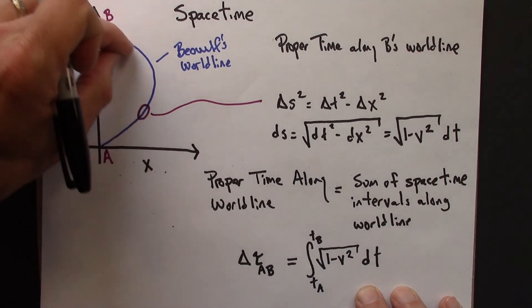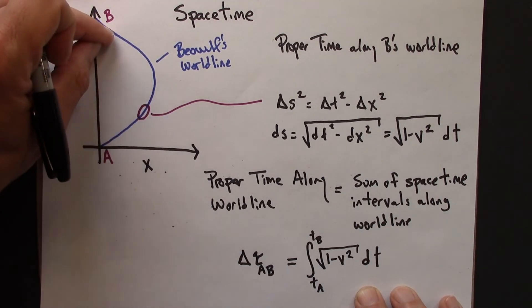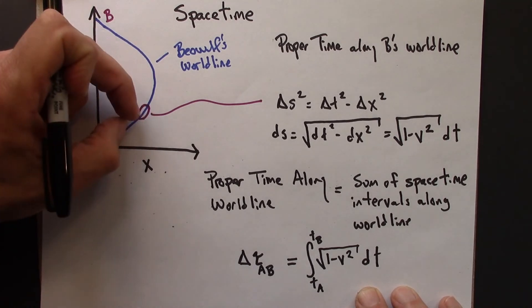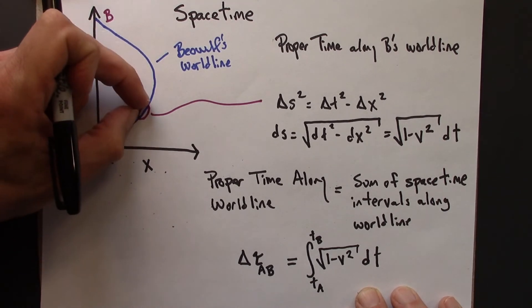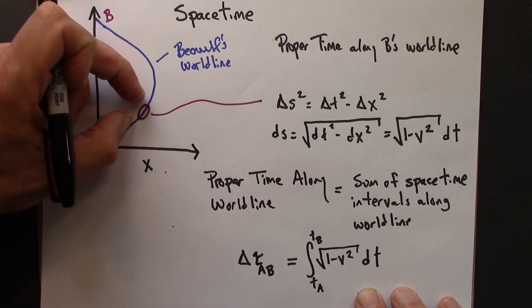The proper time along a world line is the sum of the spacetime intervals along the world line. We take this world line, this curve through spacetime, and we zoom in segment by segment, and say, aha, these segments look straight.